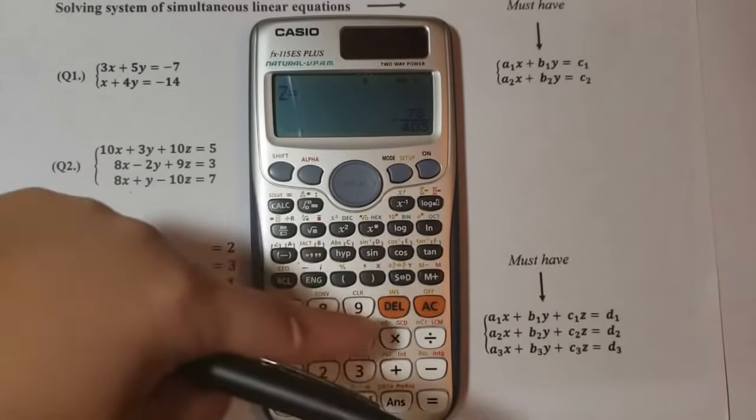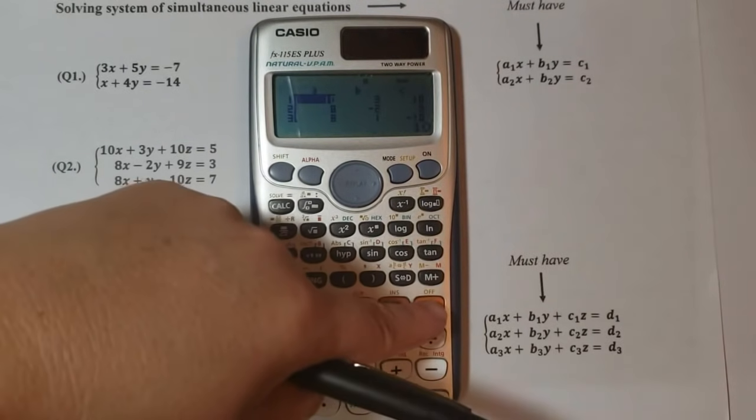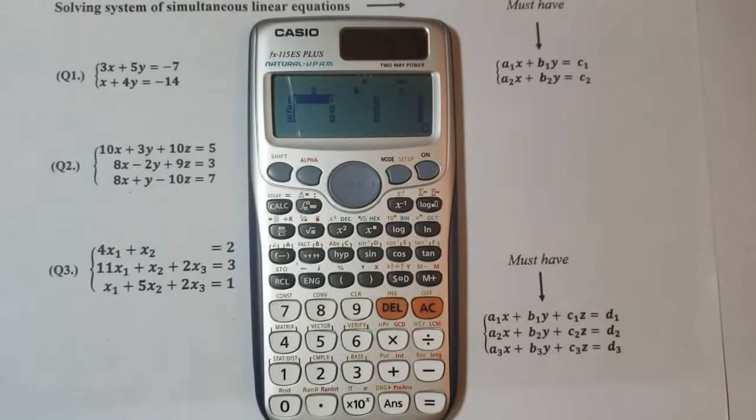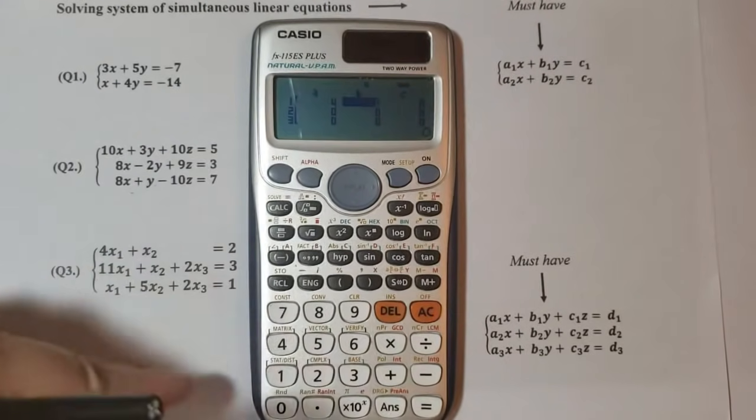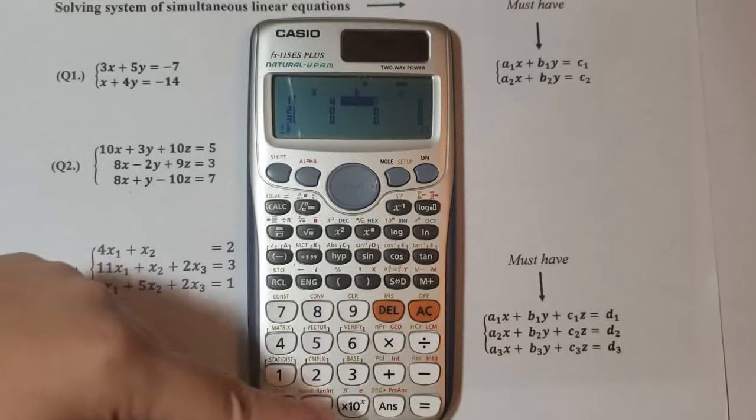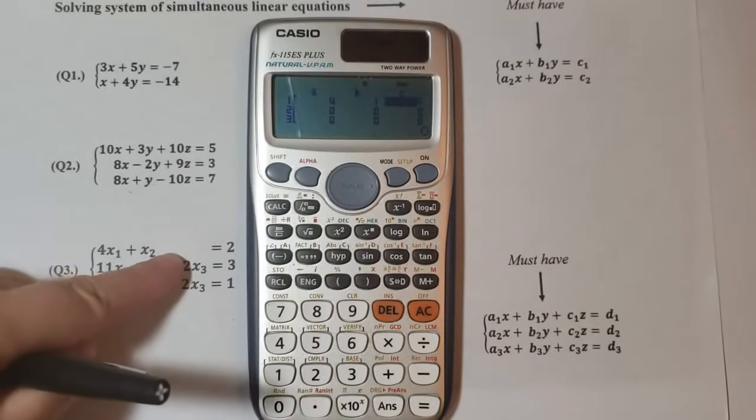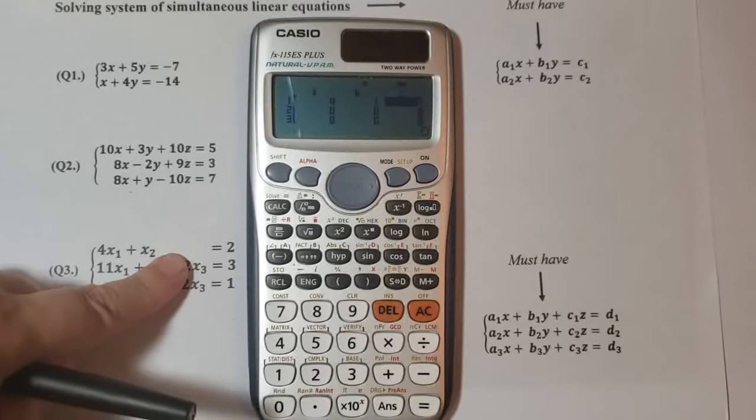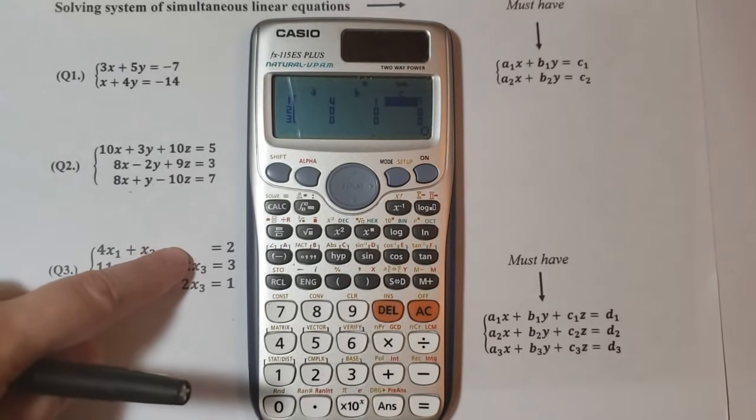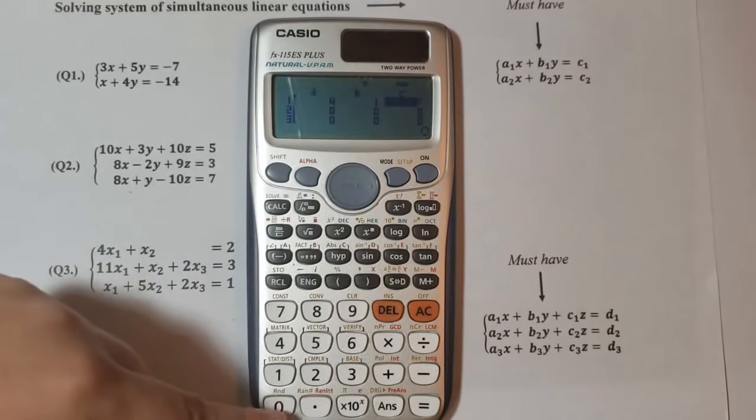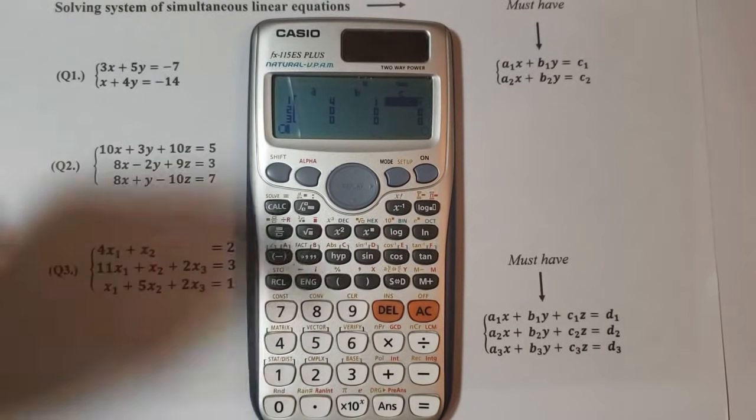So let's do this one. All clear. I'll press it again. All clear. And then 4 equal, 1 equal. Now here, right here we can see that I don't have any x3 variable. So it means it is equal to 0. I will just enter 0 here since 0 is a number as well.